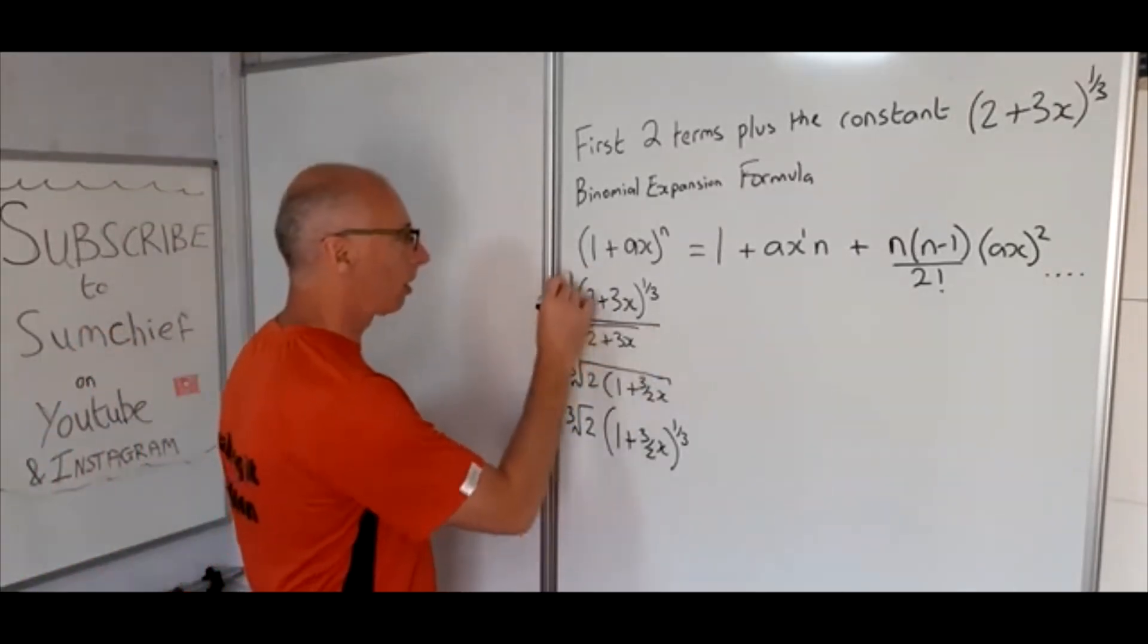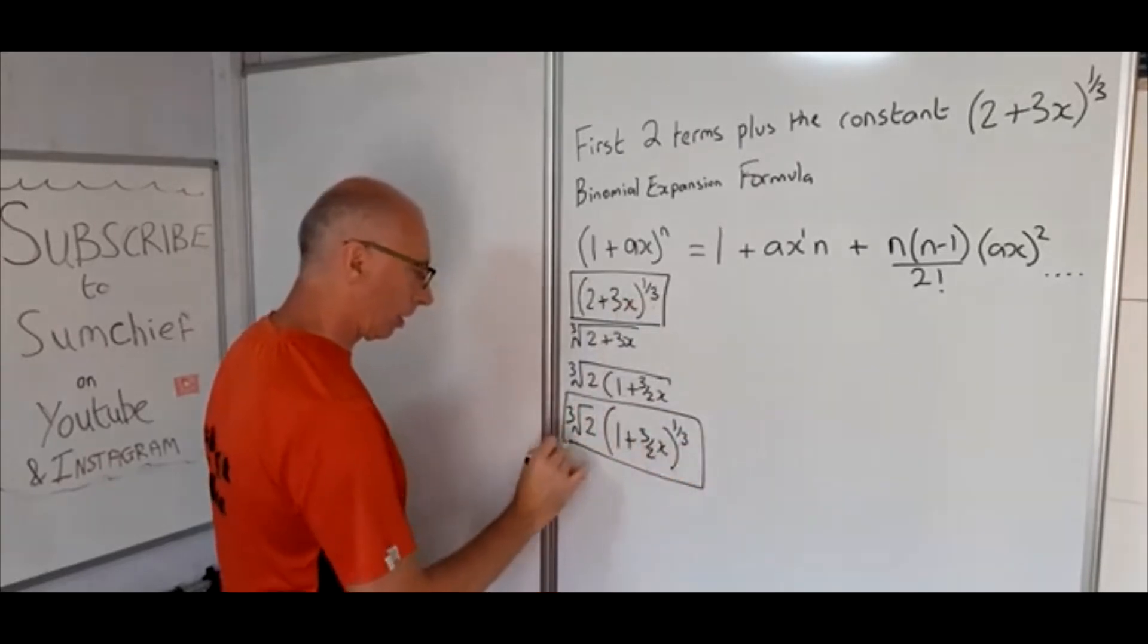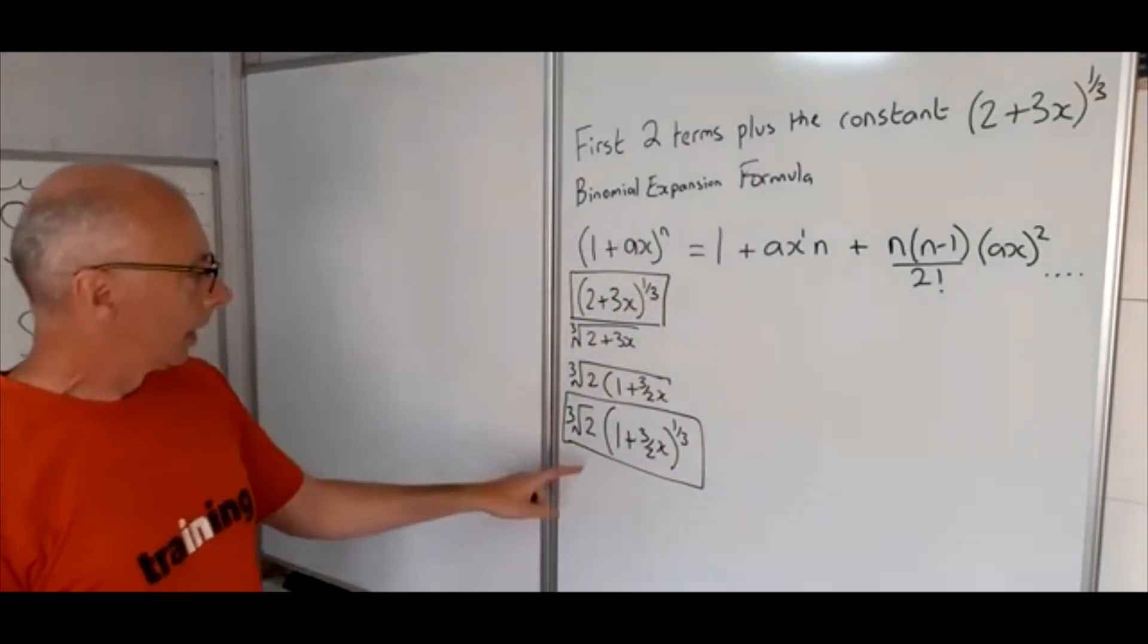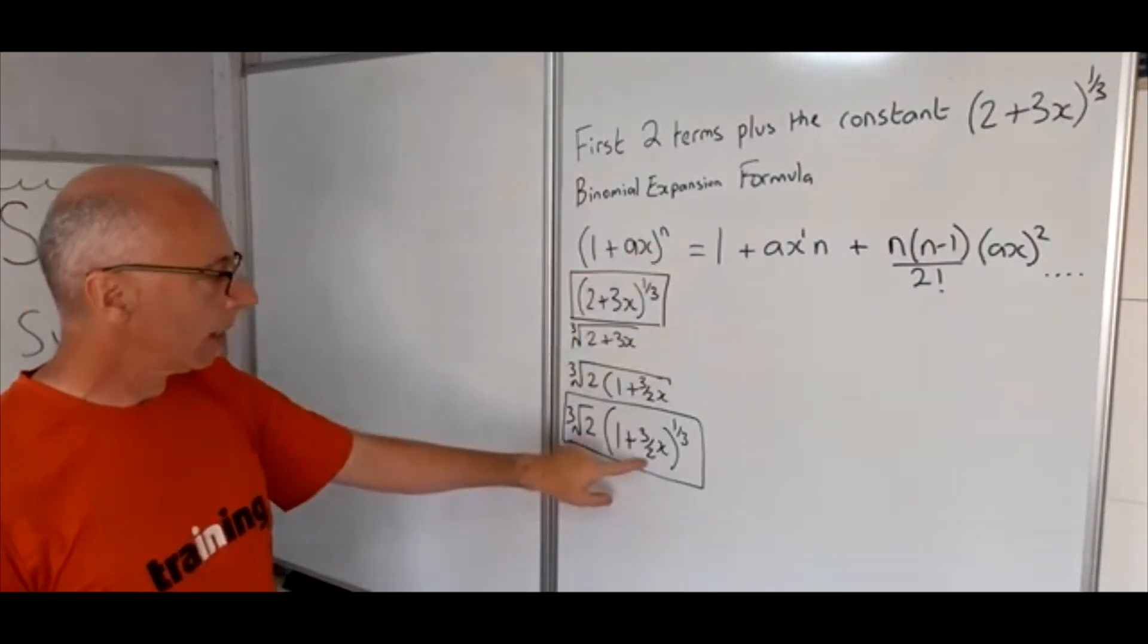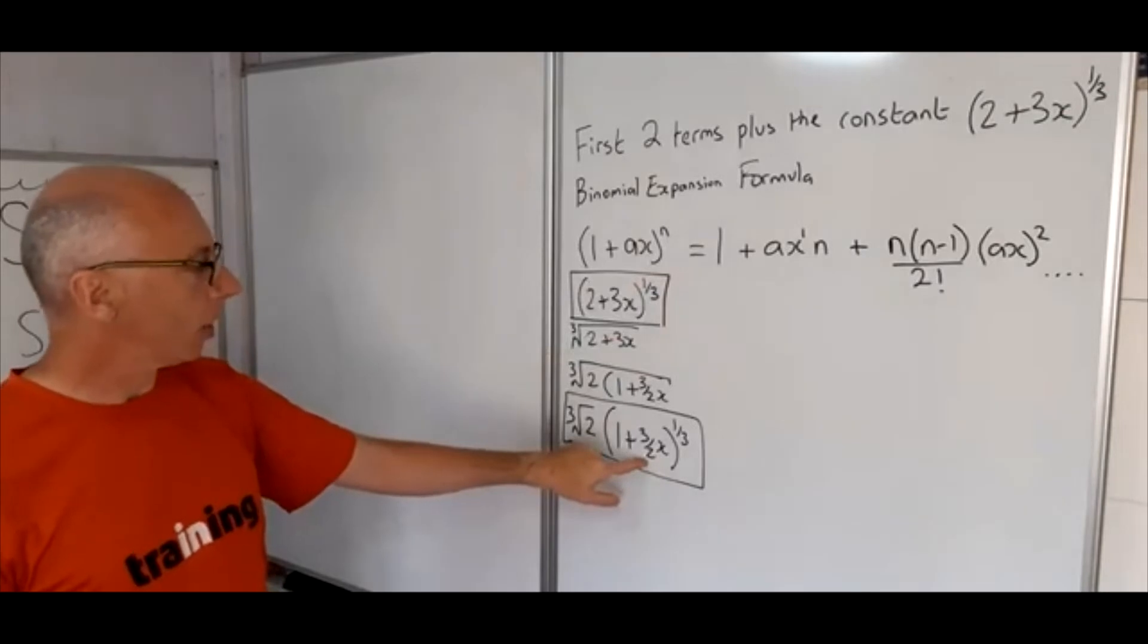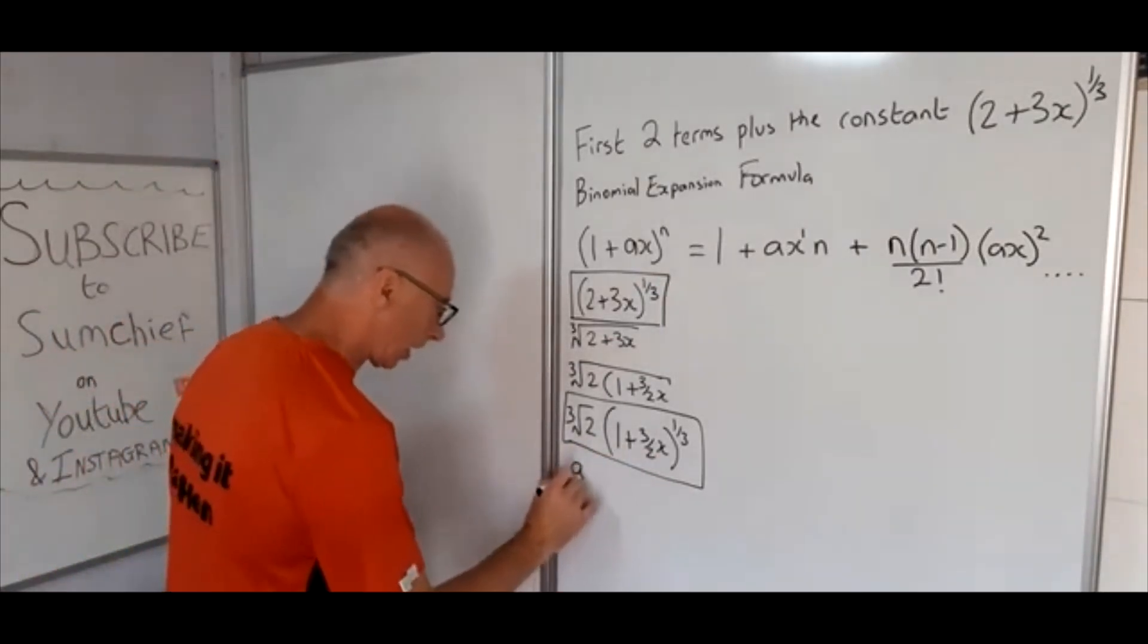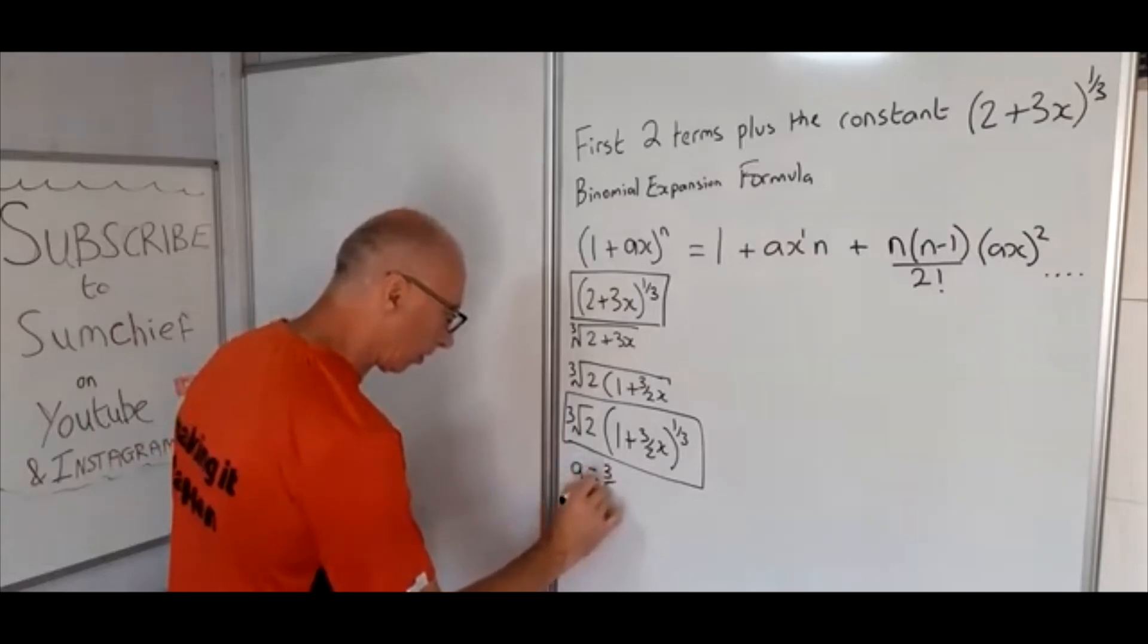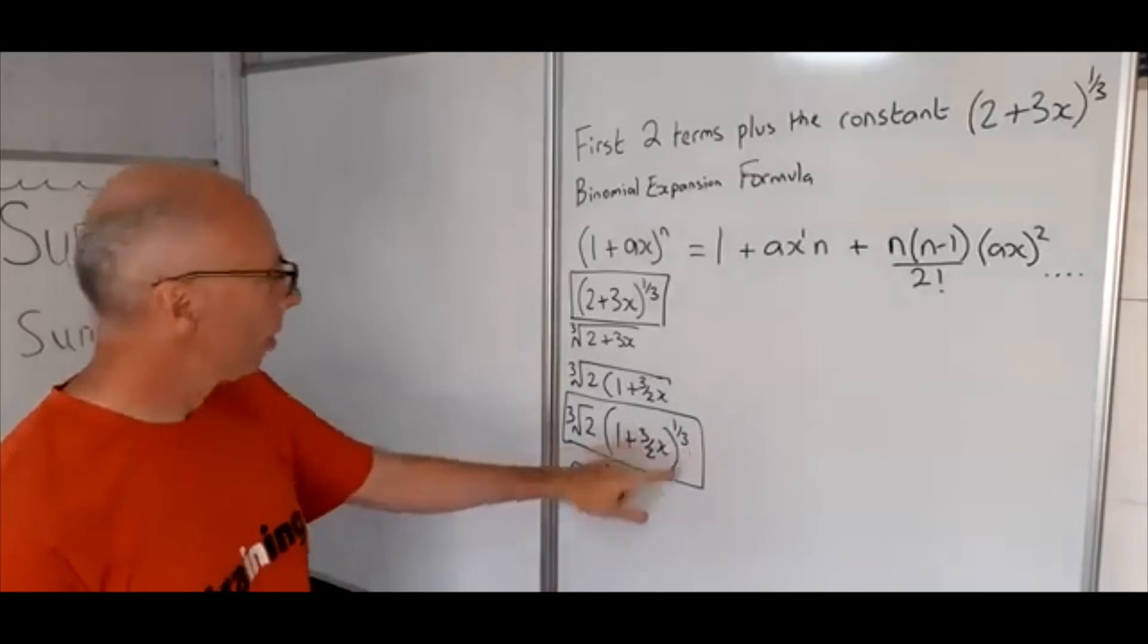So this is equivalent to this. Now using our formula (1 + ax)^n, we can see that our a is 3/2. Let's write that down here: a equals 3/2 and our n is 1/3.